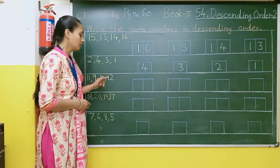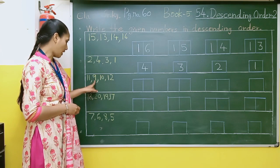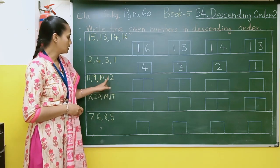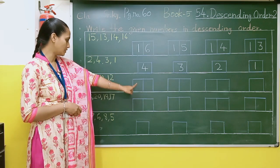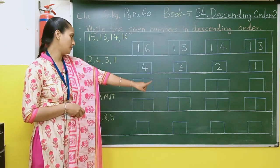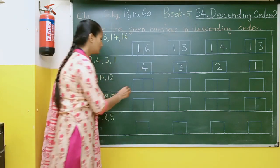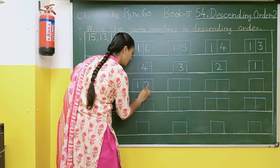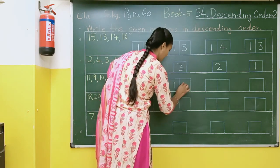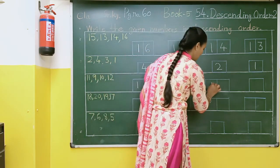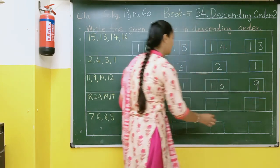Here the given numbers are 11, 9, 10, 12. So here we will write 12, then 11, then 10, and then 9. So in this way we can arrange them into descending order: 12, 11, 10, 9. Okay students?